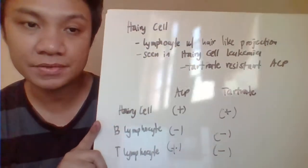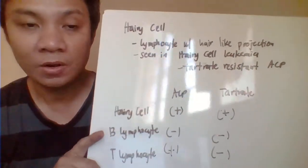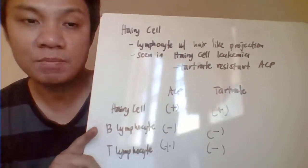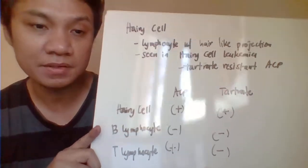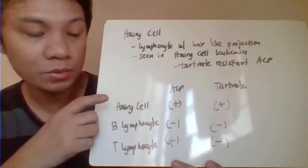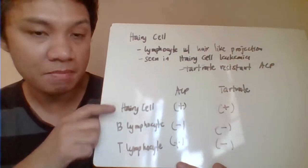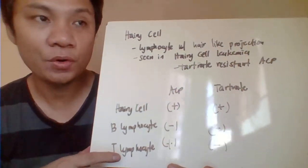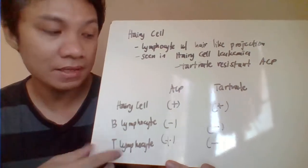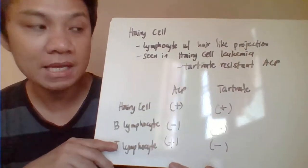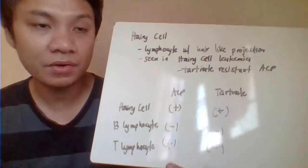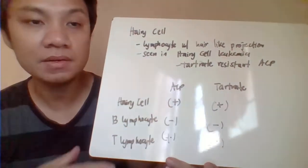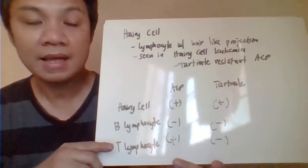Lastly, we have the hairy cell — a lymphocyte with a characteristic hair-like projection associated with hairy cell leukemia. This is characterized by the tartrate-resistant acid phosphatase (TRAP) test. The acid phosphatase test gives a positive result for hairy cells and B-lymphocytes, but upon addition of tartaric acid, hairy cell leukemia will not be inhibited by tartrate, whereas B-lymphocytes will be inhibited. This makes hairy cell leukemia tartrate-resistant acid phosphatase positive.